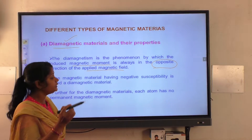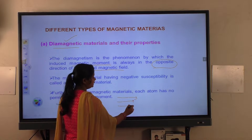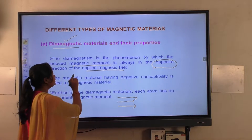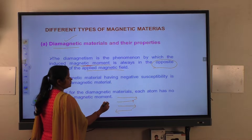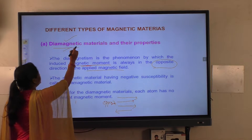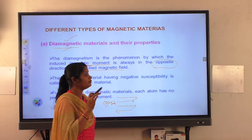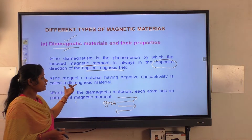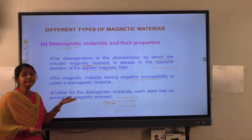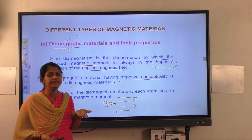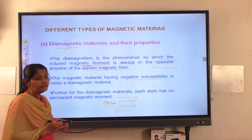For example, if you are applying the magnetic field in one direction, then the induced magnetic moment moves in the opposite direction. In case of diamagnetic materials, the induced magnetic moment is always in the opposite direction of the applied magnetic field, and these materials have negative susceptibility.